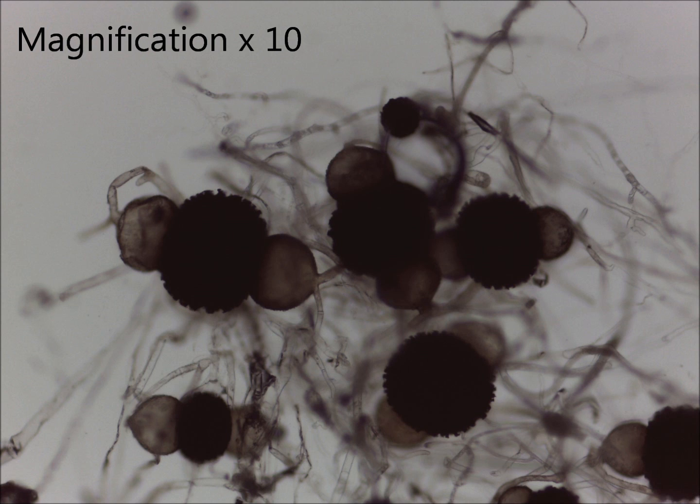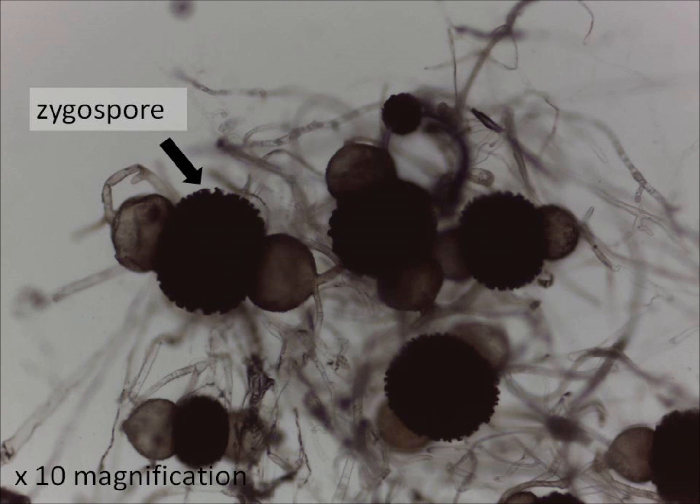Also, you can use the fine focus to change the focal plane so that you can look at different parts of the structure. You should be able to see several examples here of the zygospores.